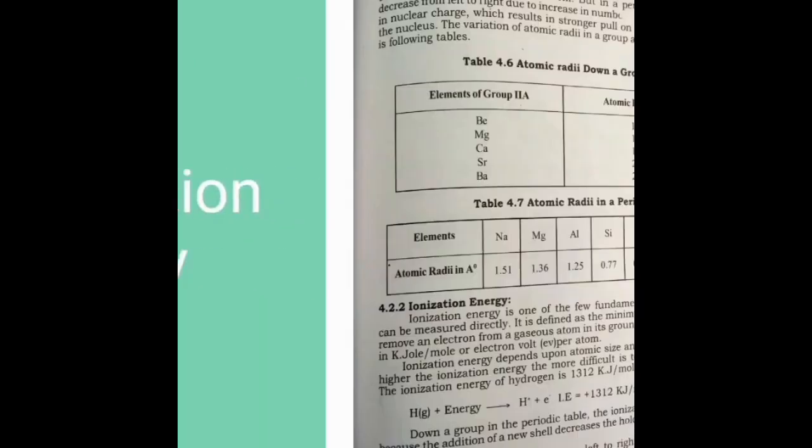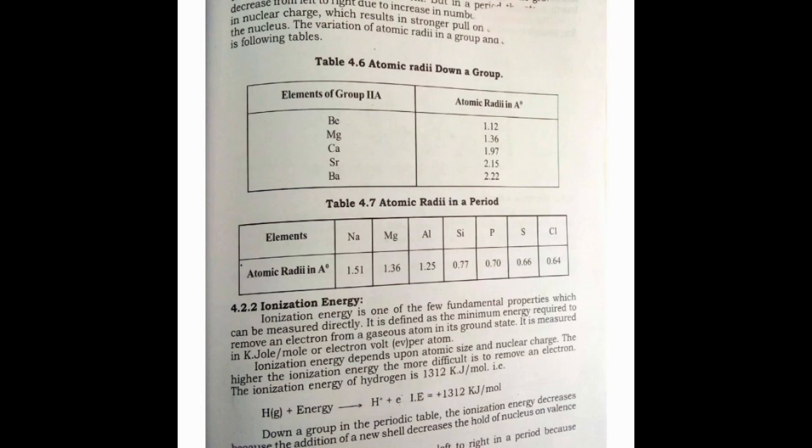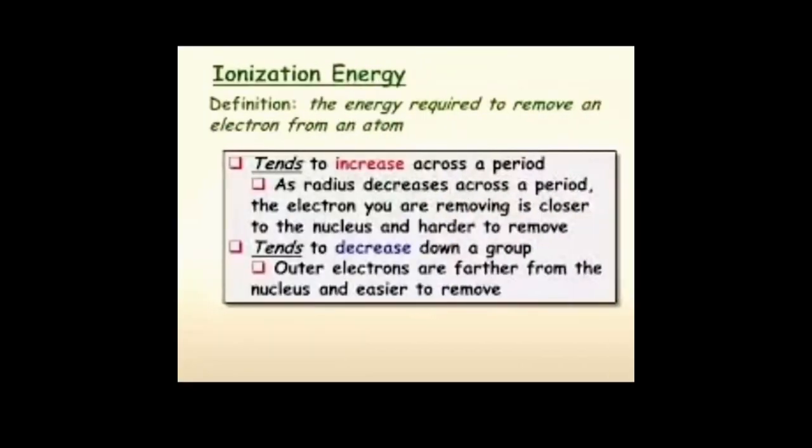Now second property, ionization energy. Ionization is the breakdown of an atom, that is the releasing of the electron from the atom. We define it as the energy required to remove an electron from an atom.